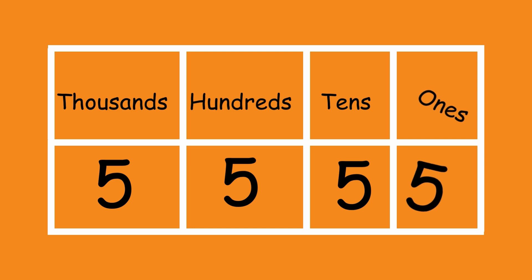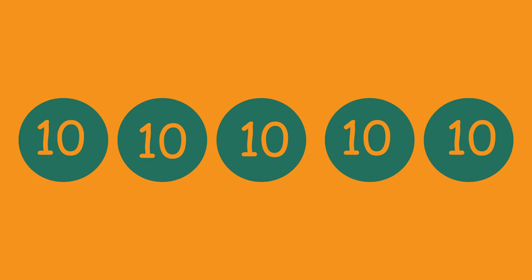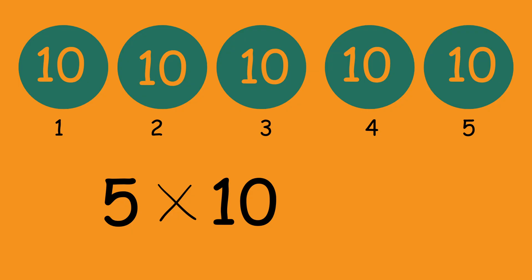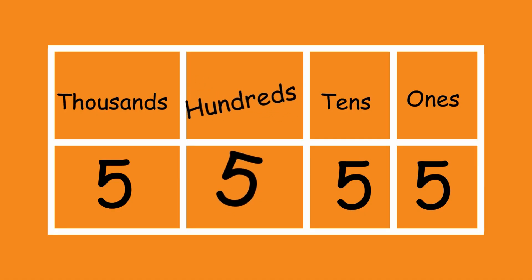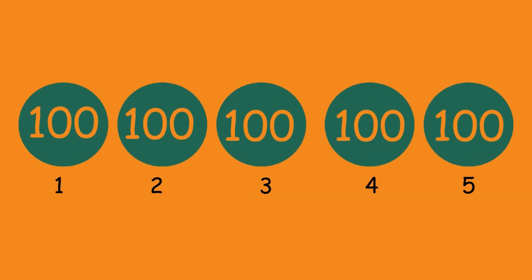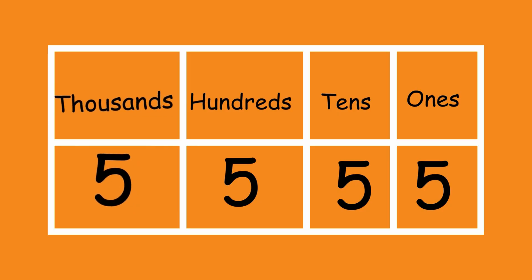The five in the place of ones is just a single digit — it is just five. The five in the place of tens is not single; it is a group of ten, meaning five groups of tens, five times ten, and that makes 50. The five in the place of hundreds means five hundred, because it is in the group of hundreds. And lastly, the five in the place of thousands means five thousand, because it's in the spot of thousands.